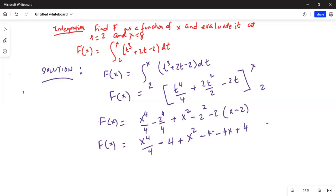Then minus 4x plus 4, because minus 2 distributed to x, minus 2 distributed to minus 2. So this 4 and this 4 will cancel. Now we will be left with x⁴ over 4 minus 4 plus x square minus 2x.